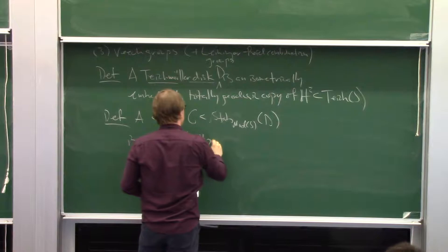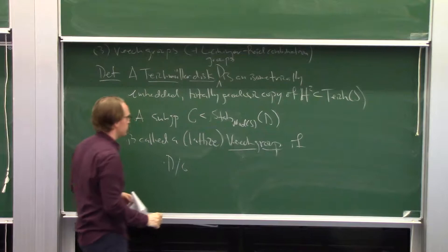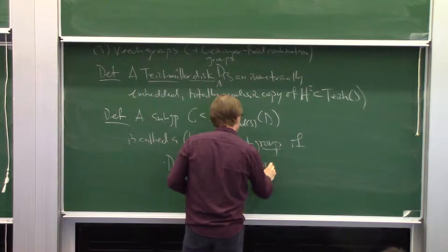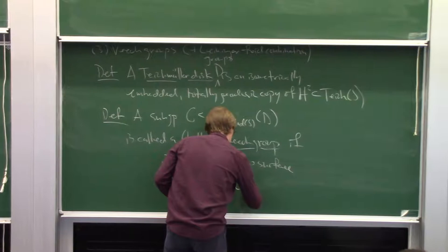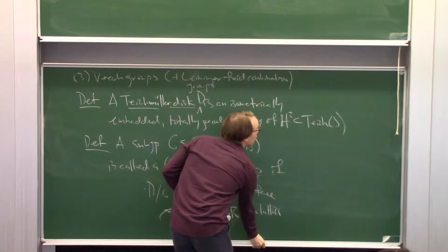The quotient of H² by the action should be a finite-area hyperbolic surface, so this will always have punctures. We have some group acting by isometries on H², a homomorphism into SL(2,R), and I want the image of G into SL(2,R) to be a lattice.